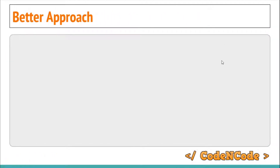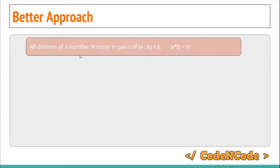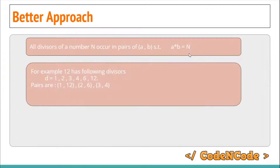Towards a better approach, let's learn something about pairs. For each number n, the divisors of n occur in pairs such that a multiplied by b equals n. For example, take 12 — the divisors of 12 are 1, 2, 3, 4, 6, and 12, which form pairs: (1, 12), (2, 6), and (3, 4). The multiplication of each pair equals 12.